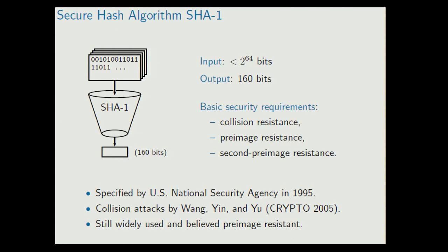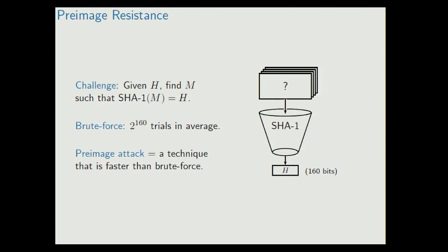At Crypto 2005, Wang, Yin, and Yu showed that collision resistance is not ideal. It's, in fact, heavily not ideal. It was a great result. But still, SHA-1 is widely used and it's believed pre-image resistant. And pre-image resistance is what we are looking at in this talk.